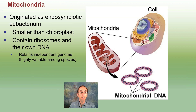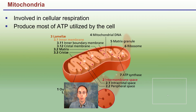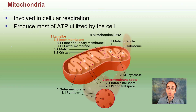Now we get to the mitochondria. It also originated as an endosymbiotic eubacterium, since it has its own DNA and multiple membranes, indicating it may have once been free-living. Mitochondria are smaller than chloroplasts; they contain ribosomes and their own DNA, retaining an independent genome that is highly variable among species. They are involved in cellular respiration and produce most of the ATP utilized by the cell.